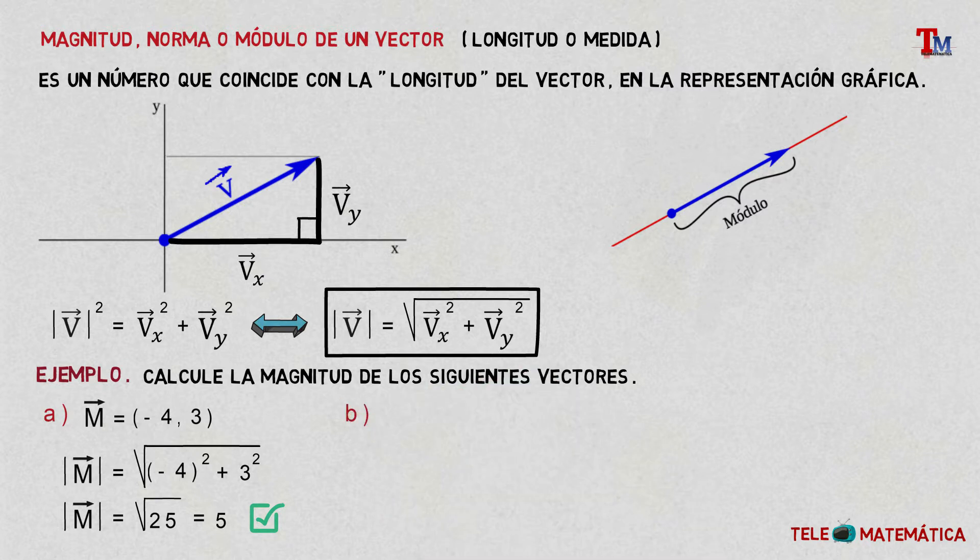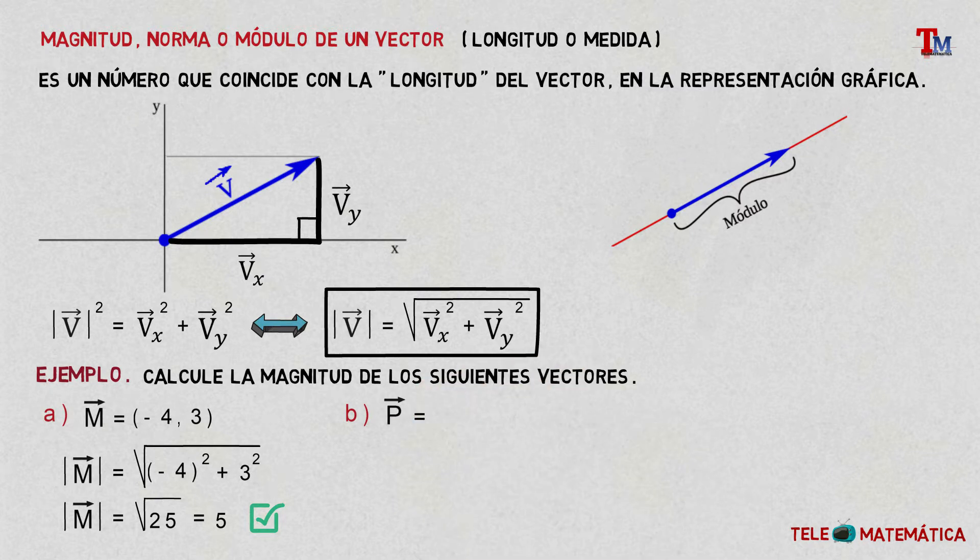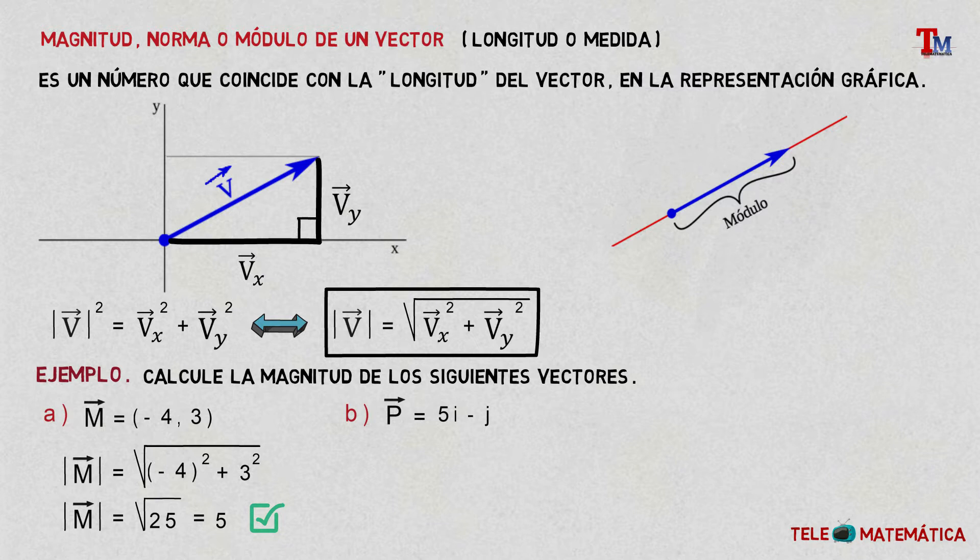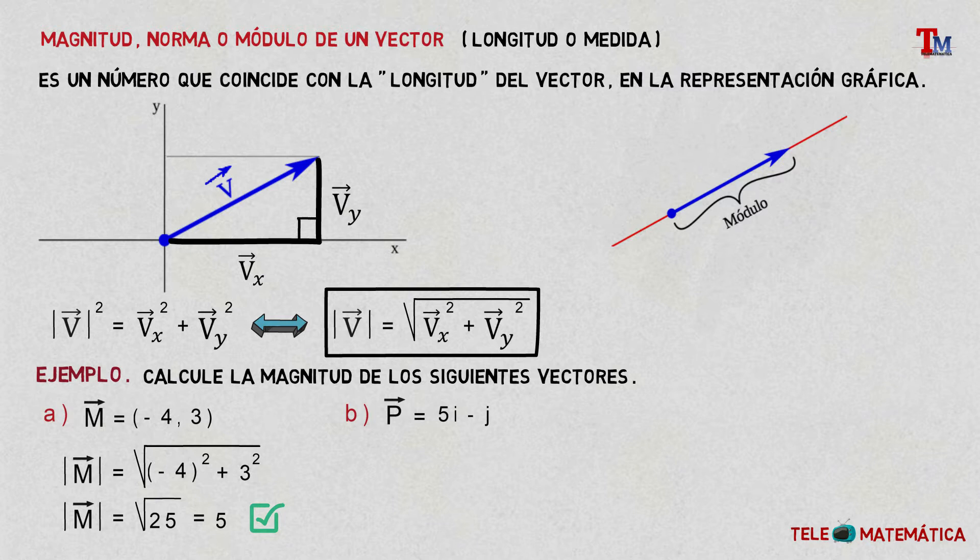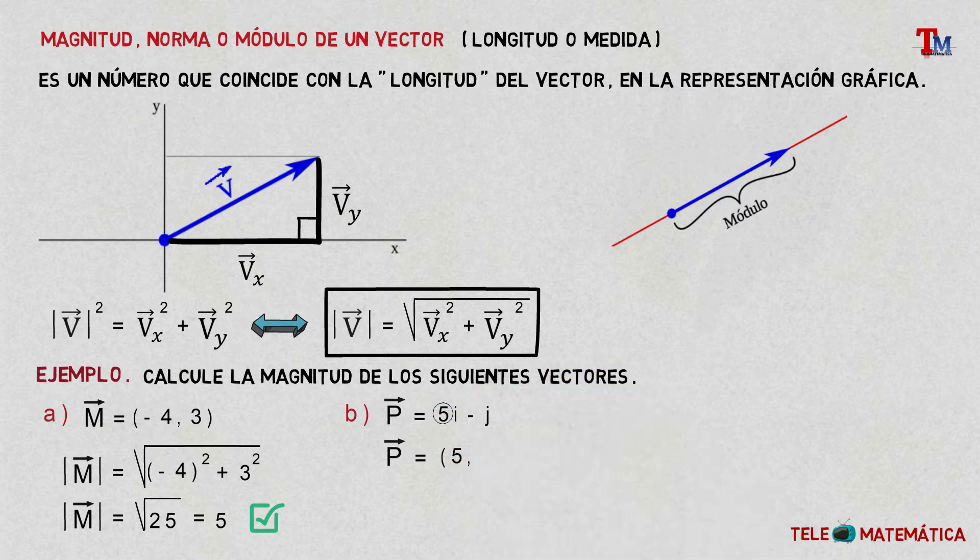Literal B, the vector P that is written as a unitary vector. Now, the recommendation in this case, first, is that we will turn this description of unitary vectors into components, and we would have that the first component of the vector will be equal to the coefficient of i, that is, 5. And the second component will be the coefficient of j, which in this case is minus 1.